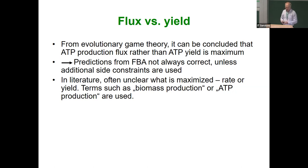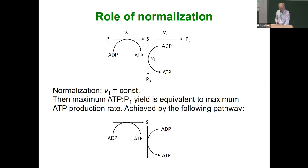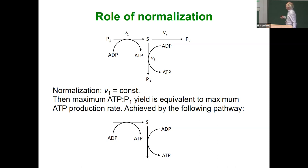Unfortunately, in the literature it is often unclear what is really maximized — rate or yield. Papers on FBA write 'biomass production is maximized' or 'ATP production is maximized,' but what does 'production' mean — production per time (a rate) or a production yield? I think this should be made clearer. Now for the normalization: in this illustrative example, ATP production is considered, and if v1 is set constant, then maximization of yield is equivalent to maximization of ATP production rate.